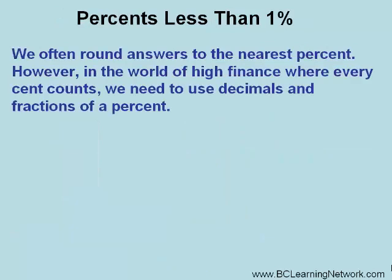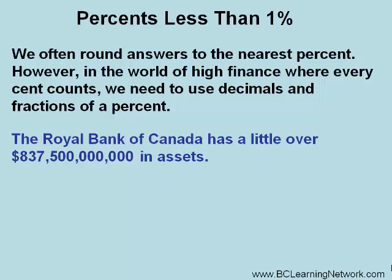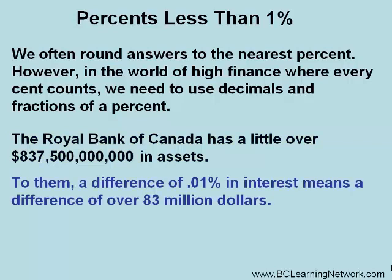We often round answers to the nearest percent. However, in the world of high finance where every cent counts, we need to use decimals and fractions of a percent. The Royal Bank of Canada has a little over eight hundred and thirty-seven and a half billion dollars in assets. To them, a difference of point zero one percent — that's one one-hundredths of one percent in interest — means a difference of over eighty-three million dollars.